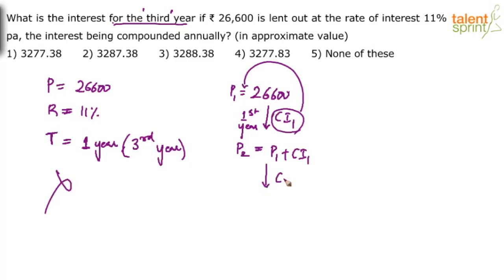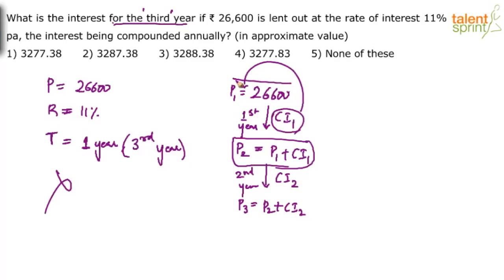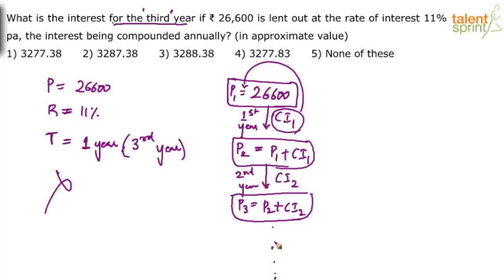On this new principal we calculate the compound interest of the second year. This gives the new principal for the third year: P2 plus CI2. In compound interest, the principal changes every year because the interest is calculated each year and compounded — meaning added back — to the principal. So starting with 26600, each year the principal grows.